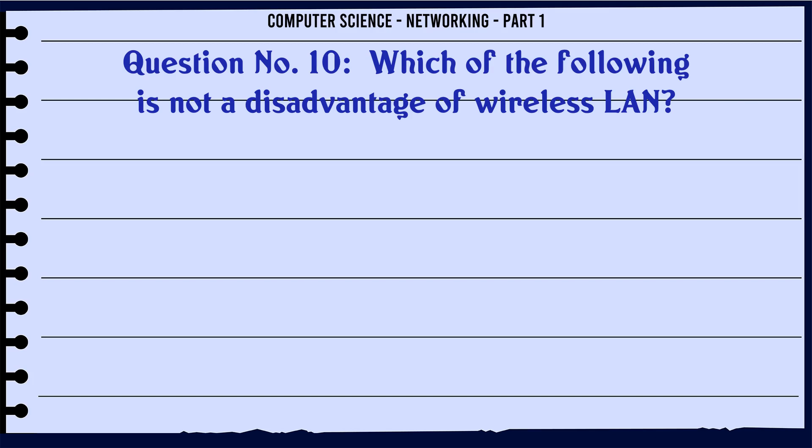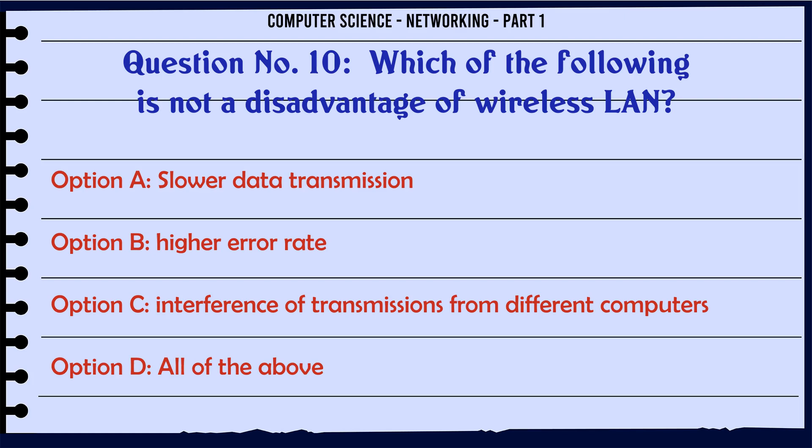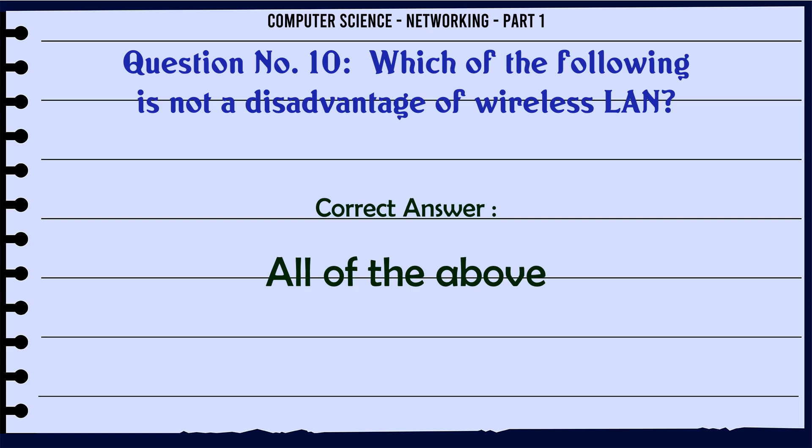Which of the following is not a disadvantage of wireless LAN? A. Slower data transmission. B. Higher error rate. C. Interference of transmissions from different computers. D. All of the above. The correct answer is: All of the above.